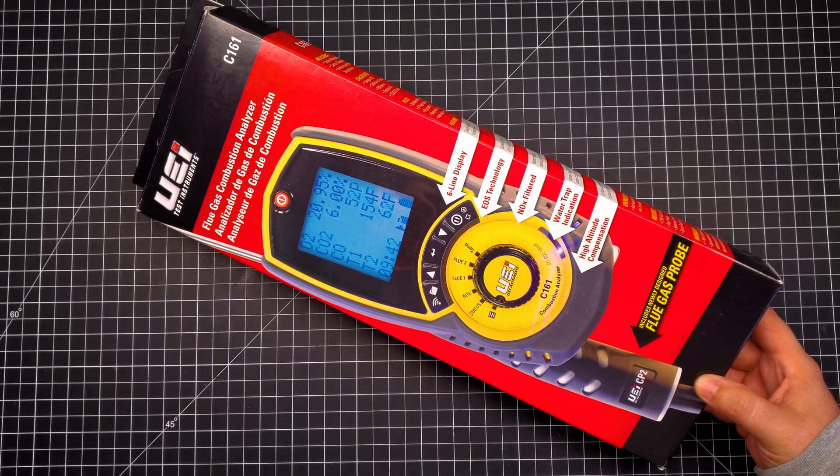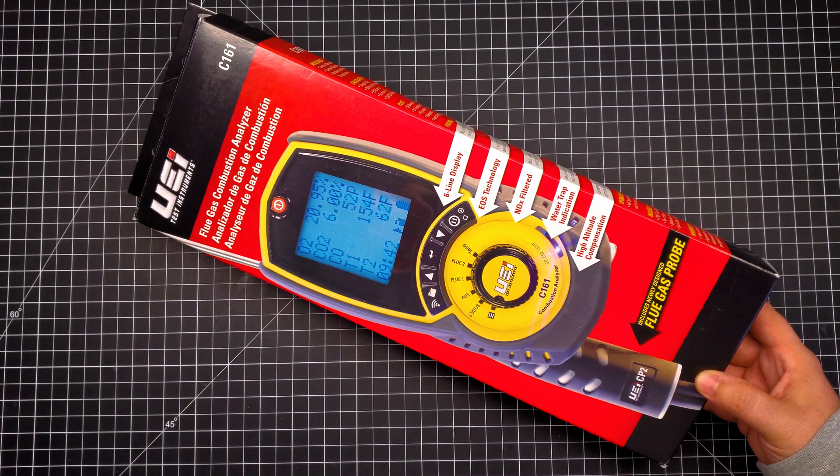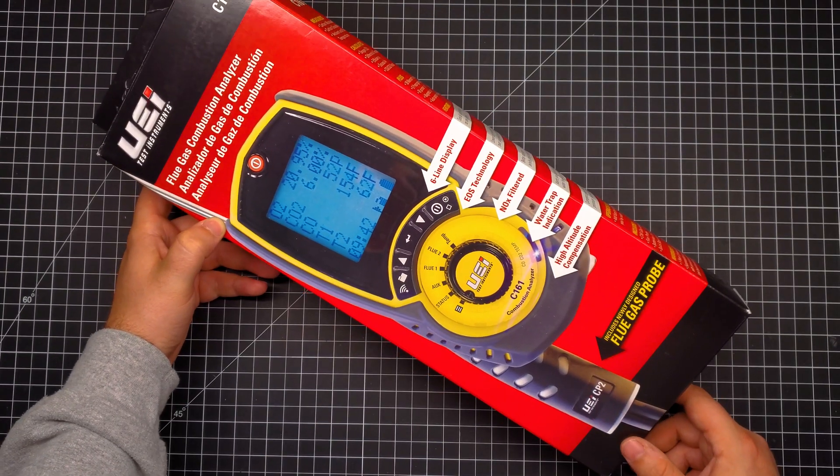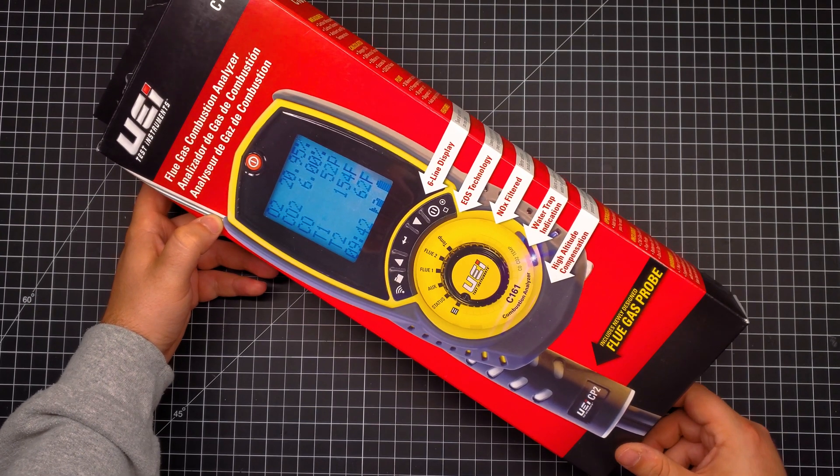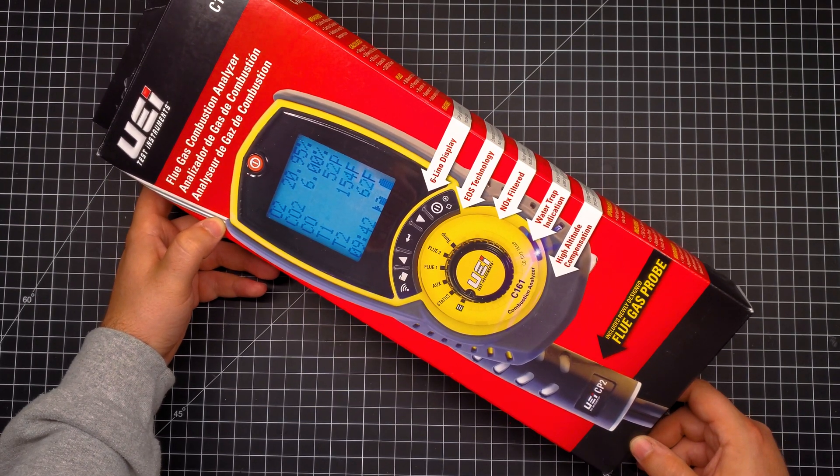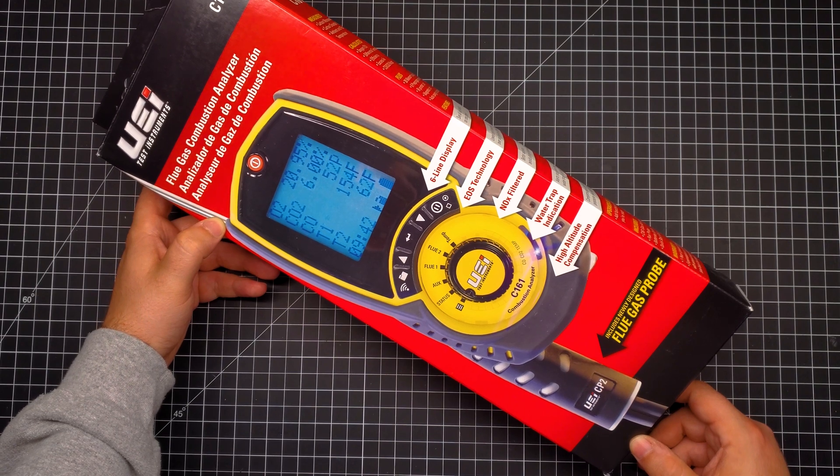Both units are identical and actually manufactured by Kane in the UK. So it's definitely a wonderful combustion analyzer not just because of the more modern look but it uses a completely different sensor technology.